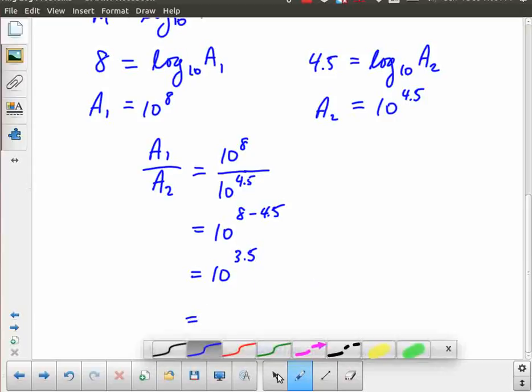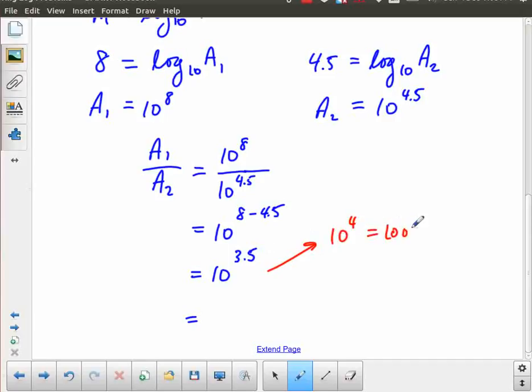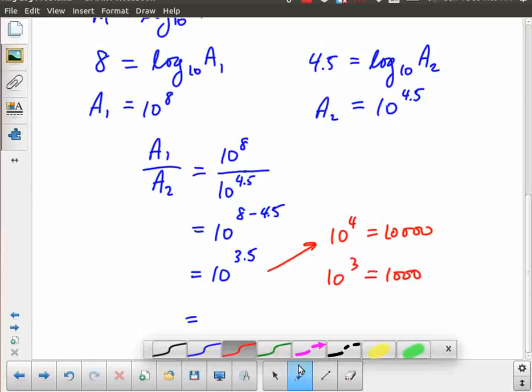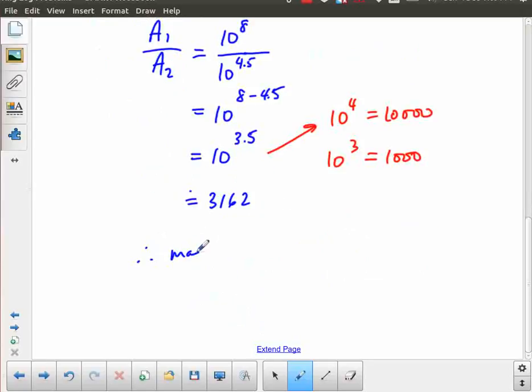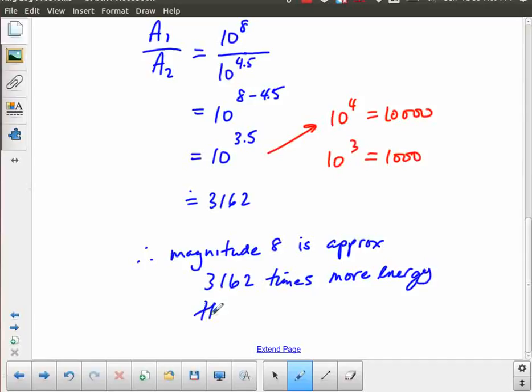Now I have a rough idea, when we talked about if I was doing this without a calculator. I know that 10 to the 4 is equal to 10,000, and I know that 10 to the 3 is equal to 1,000. And so I know 10 to the 3.5 gives me a value that's somewhere between 1,000 times the energy and 10,000 times the energy. Or I could just go ahead and put it into my calculator, which I did admit is usually quite handy, and I end up with 3162, and that's approximate. So therefore the magnitude 8 is approximately 3162 times more intense, or more energy than magnitude 4.5.